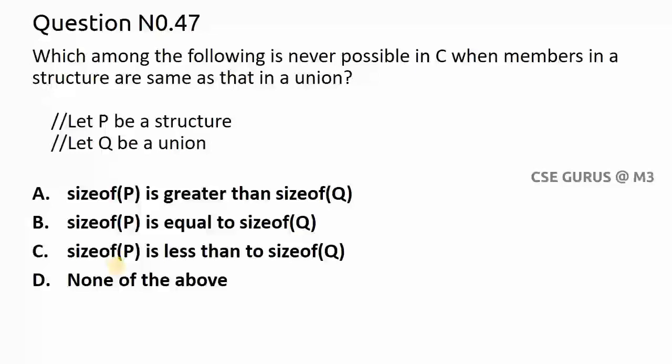Which among the following is never possible in C when members in a structure are same as that of union? So here he has taken P is one structure, Q is union. So like this we can take struct P and here I'll take union Q. Now what the question is, which is not possible, it is not asking which is possible.